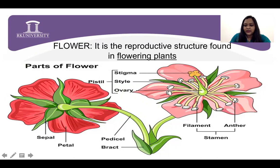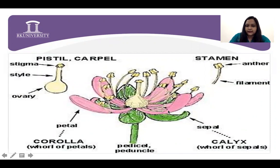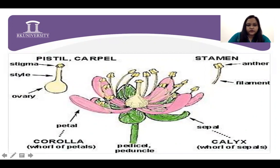Now let's see the right answer. The outermost whorl of the flower is called calyx, and the single unit of calyx is called sepals. The second whorl is called corolla, which is most attractive — colors are found in the petals. They are colorful: maybe pink, red, blue — their colors are different.